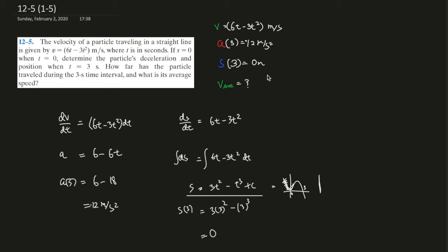Because what is average speed? Average speed is the distance total over the time total, right? Time total we know, right? Three seconds. But what is the distance total?